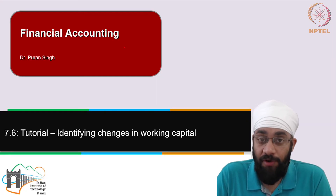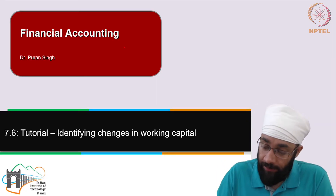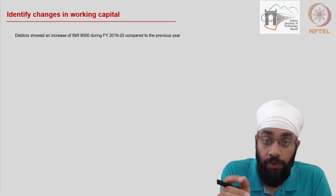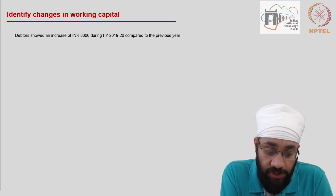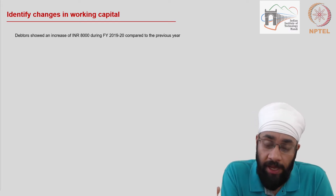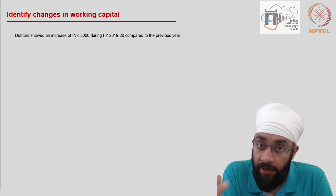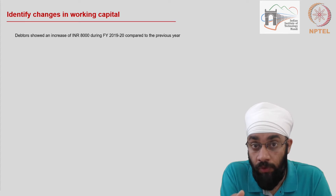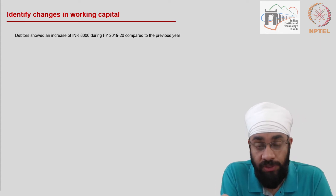This is a tutorial on working capital changes. We are going to look at a list of transactions which indicate changes in current assets or current liabilities, and then we're going to say whether this results in an increase in the cash of the business — an inflow — or a decrease in cash — an outflow.